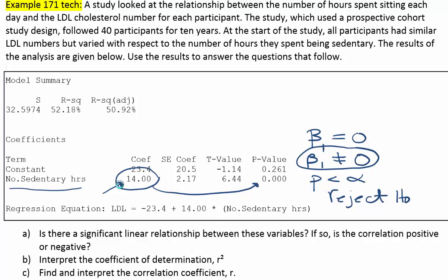So basically what this says is the two variables are moving in the same direction. As the number of sedentary hours increases, so does the LDL cholesterol number. Remember the LDL cholesterol number is the bad cholesterol. That's the sticky one that gets stuck to the inside walls of the arteries and causes blockages. So the LDL number seems to go up as the number of hours spent sitting each day increases, and of course the opposite is true as well. If the number of hours you spend sitting each day goes down, then the LDL number seems to go down with it.